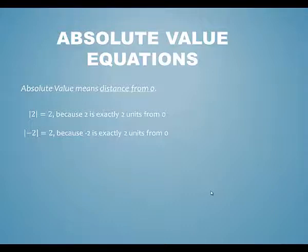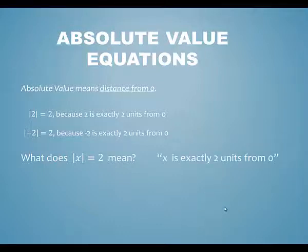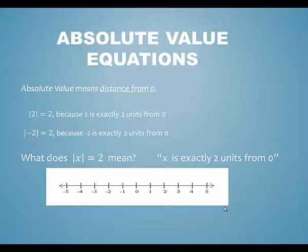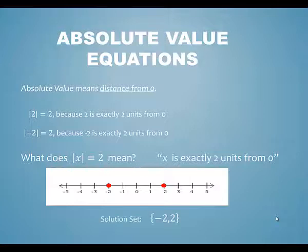Let's look at an algebra problem. What does the absolute value of x equals two mean? It means that whatever number x is, it's exactly two units from zero. To solve this equation, we think about which numbers on the number line are two units from zero. You could move two units to the right of zero, landing at two, or two units to the left, landing at negative two. So the solution has two answers: negative two and positive two.